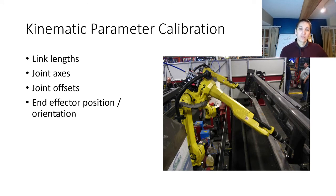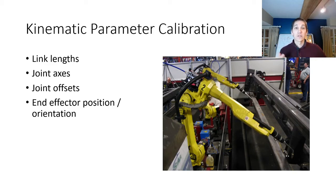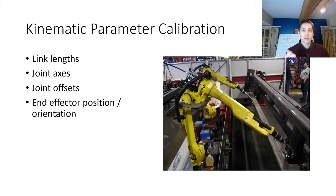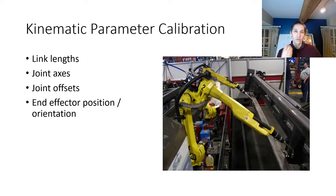We may also need to calibrate the parameters of our robots themselves. We have kinematic models of robots which depend on link lengths, joint axes, and joint offsets. Especially when trying to do very precise operations, the factory calibration that comes out of URDF models will not be exactly correct. So if you're really trying to get millimeter-level accuracy, you'll often need to recalibrate the kinematic parameters of your robot.